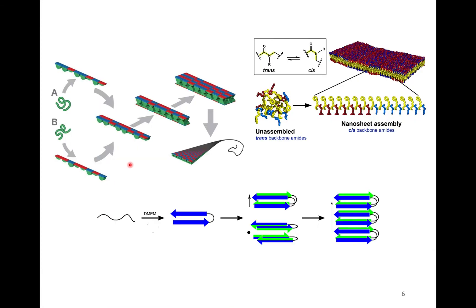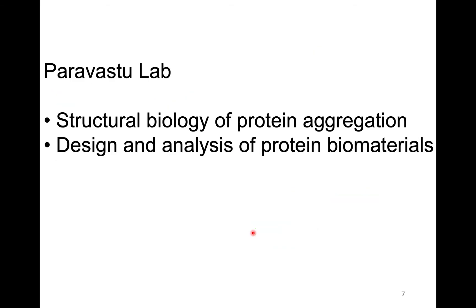These are examples of designer systems. This is that co-assembling nanofiber — two peptides come together to form a nanofiber. This is a peptoid nanosheet. A peptoid is a peptide mimic, and this is a beta hairpin system that forms an extracellular matrix upon addition to the body.